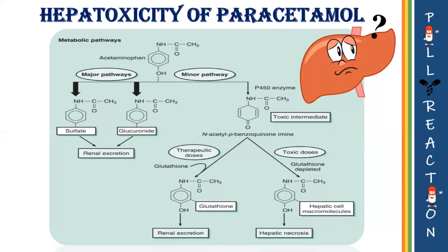In cases of overdose, depletion of glutathione stores takes place. This is because there is only a limited amount of glutathione in hepatocytes. In an overdose, high levels of NAPQI will eventually deplete all the glutathione stores in the hepatocytes. When this happens, NAPQI starts accumulating. Since NAPQI without glutathione conjugation is a toxic metabolite, it causes cell death leading to centrilobular hepatic necrosis. It is also worth mentioning that people who regularly consume three or more alcoholic drinks per day are at increased risk of paracetamol-induced hepatotoxicity.